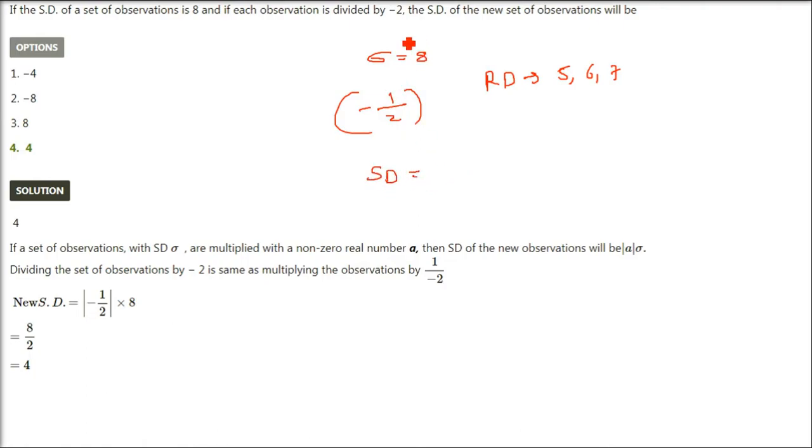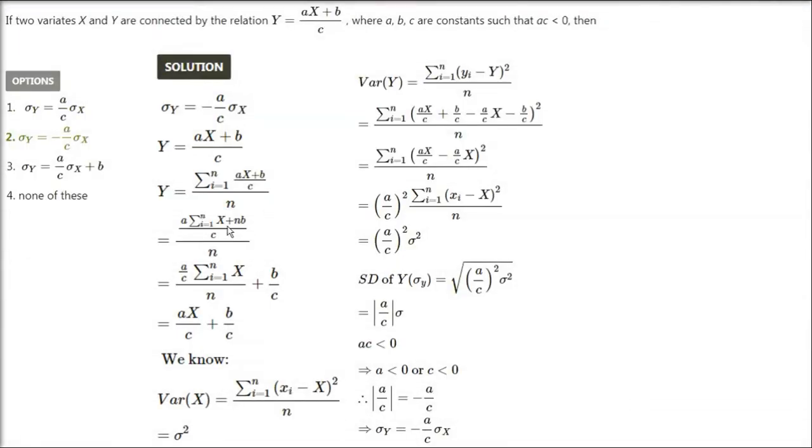Simply to conclude, the standard deviation new equals the standard deviation old multiplied by that number. You have to take the modulus of the number being multiplied by each observation. So the new standard deviation will be minus half times 8. Minus half becomes plus half because we're taking modulus. So 4 is the answer.